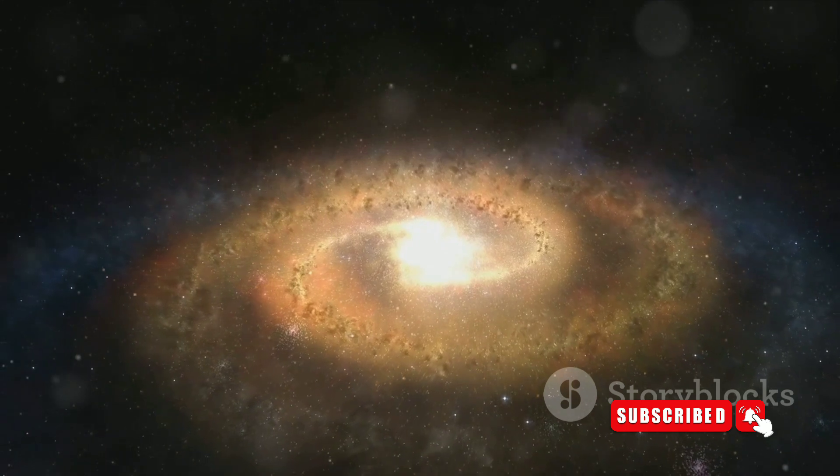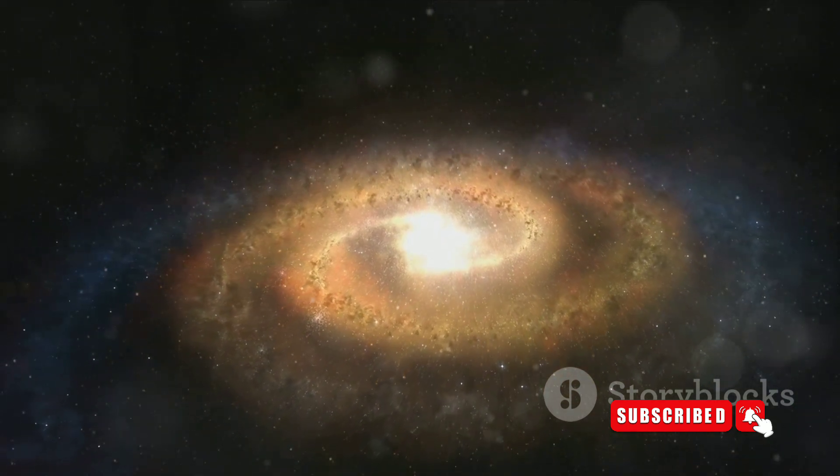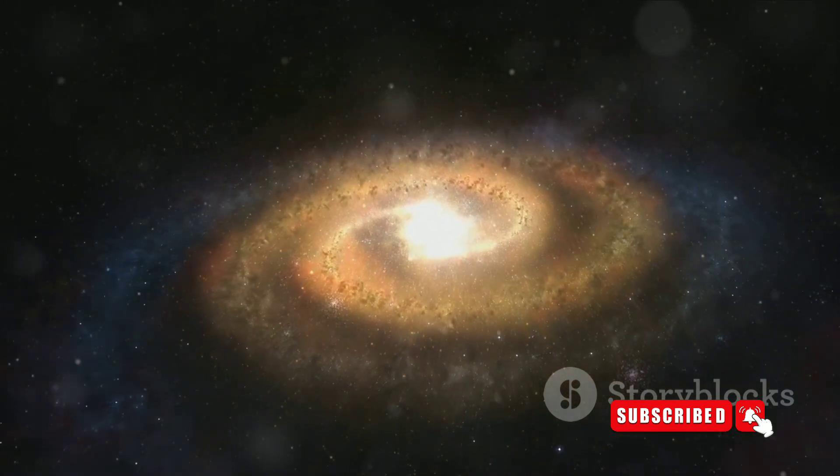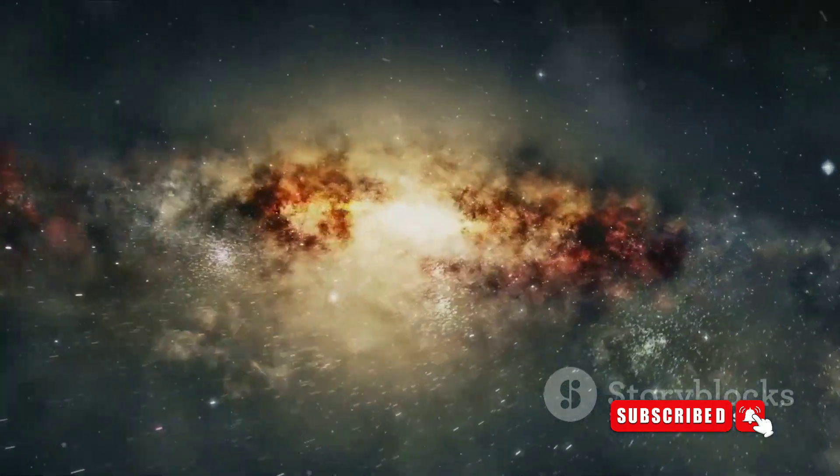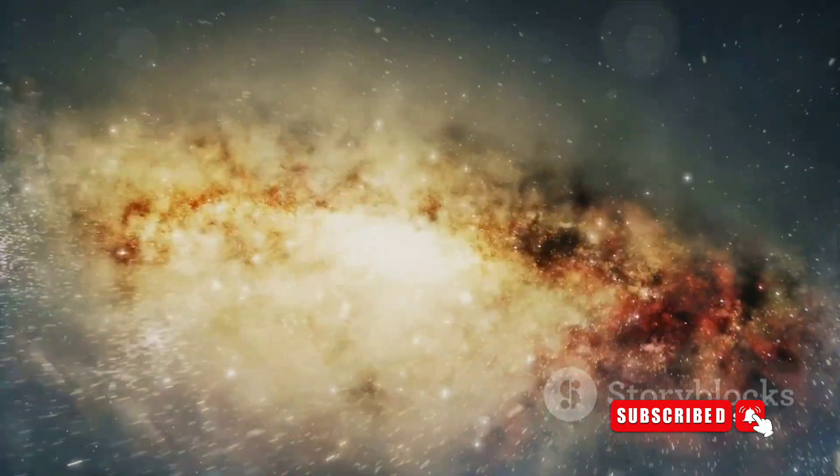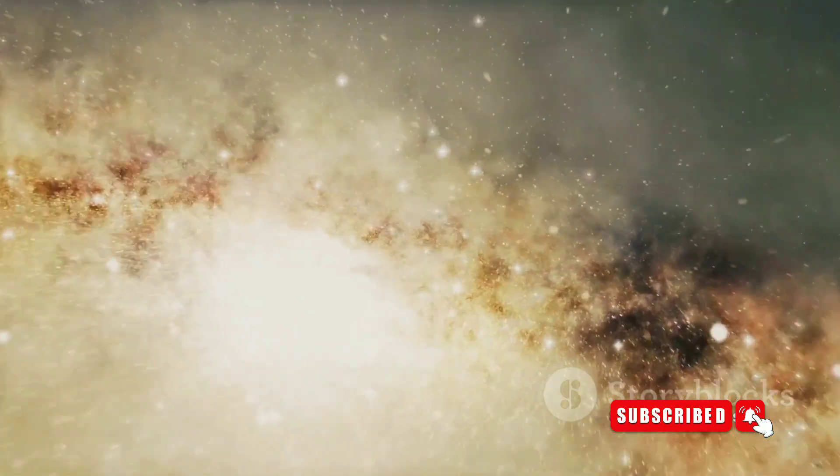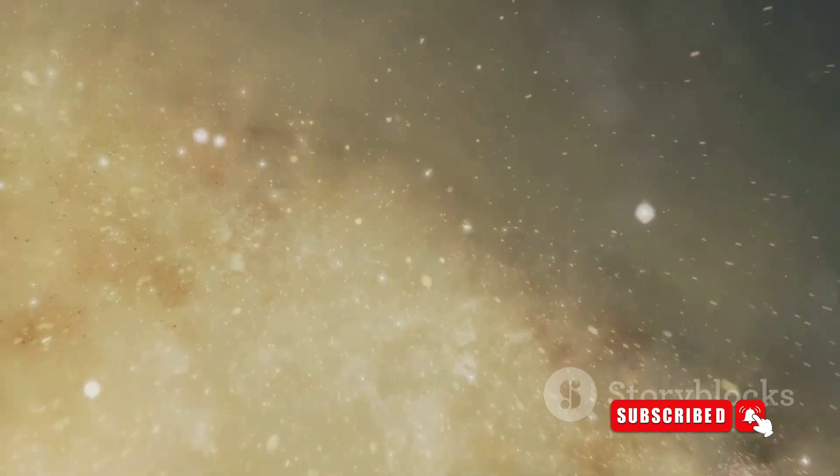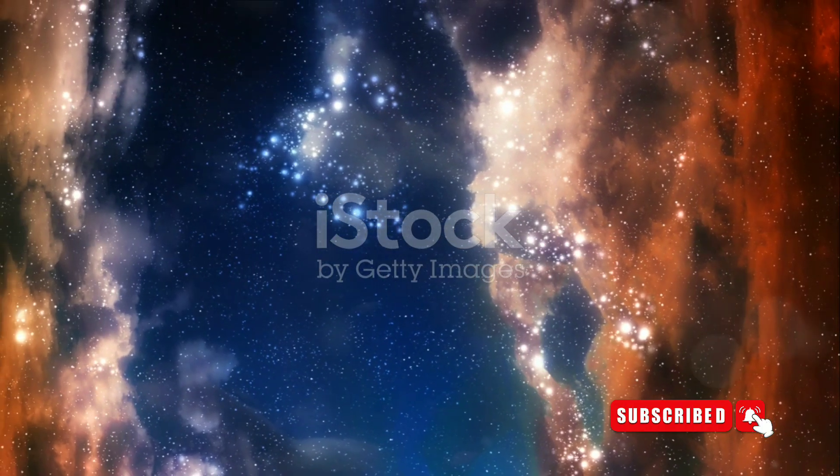Picture a flat spinning disk with arms that spiral outwards like a cosmic pinwheel. This is where the majority of the Milky Way's stars reside, including our very own sun. At the heart of this spiraling expanse lies a central bar, a denser region of stars that gives our galaxy its barred description. But the Milky Way isn't just stars.